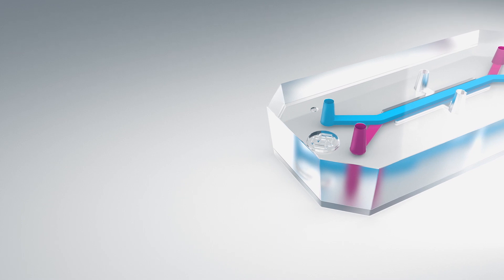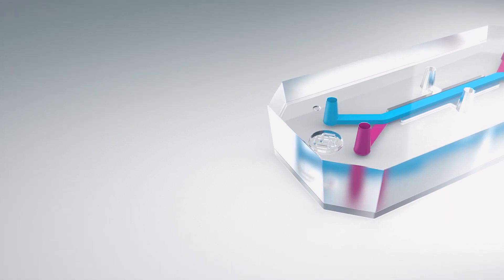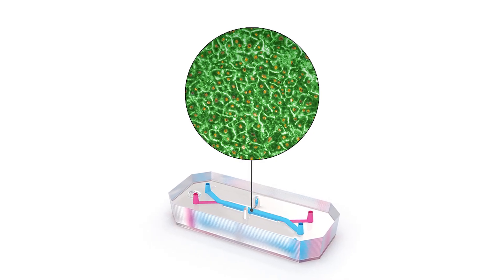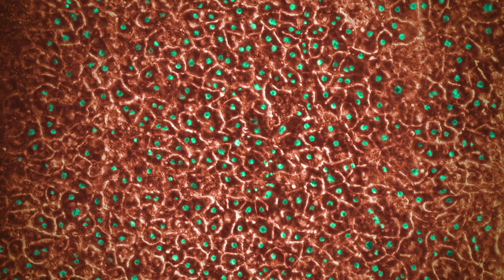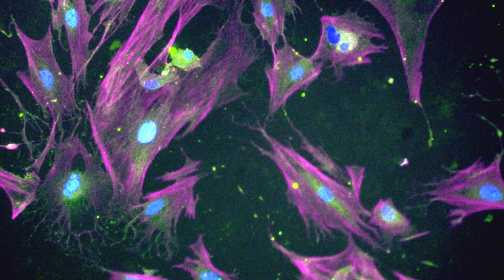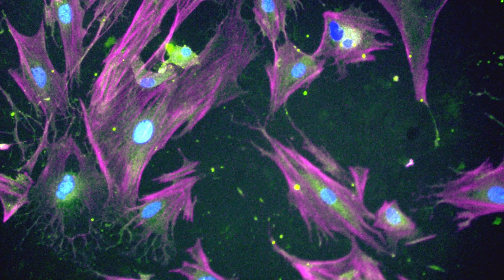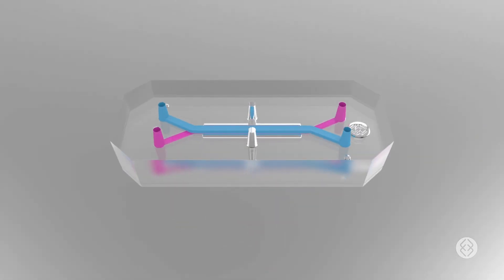In our liver chip we have four key primary cell types: hepatocytes, stellate cells, Kupffer cells and liver endothelial cells. We bring these together to emulate the liver sinusoid.